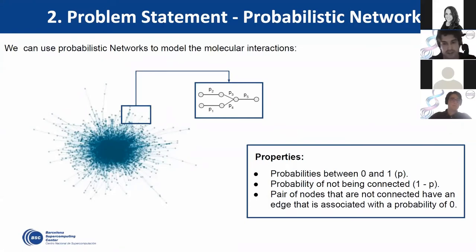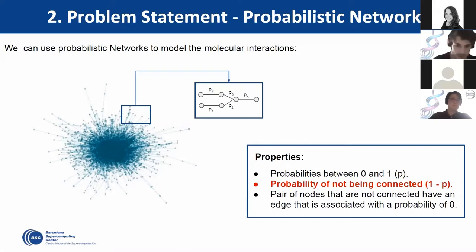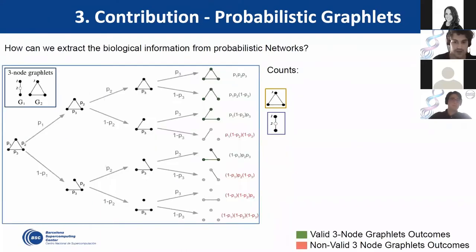Understanding a probabilistic network model is quite easy. In each interaction in this model, we have a probability of the connection existing. And importantly, because we have a probability of being connected, we also have a probability of not being connected, which is 1 minus this probability. Our contribution here was to develop a probabilistic technology to extract the local topology of these kinds of models — we call it probabilistic graphlets.